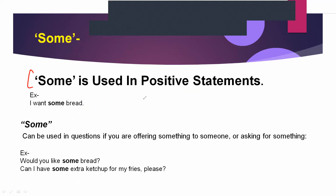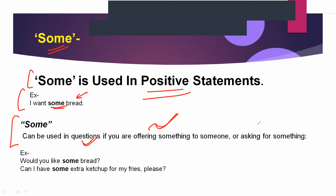'Some' is used in positive statements. For example: 'I want some bread.' Some can also be used in questions when you are offering something or asking for something. For example: 'Would you like some bread?' — here you are offering bread. 'Can I have some extra ketchup?' — here you are asking for something. So 'some' is used in positive statements as well as in offering and asking for something.